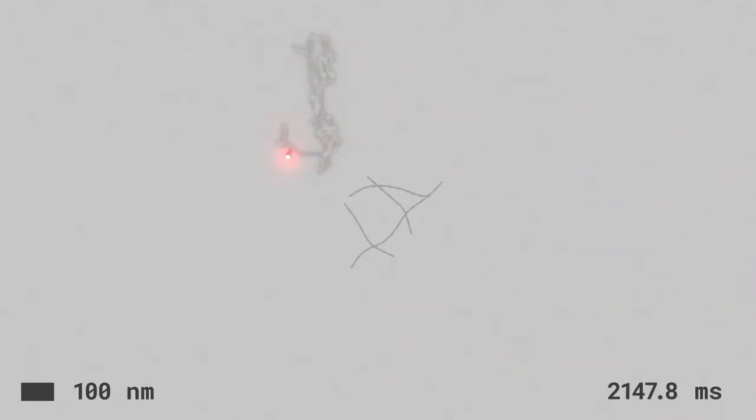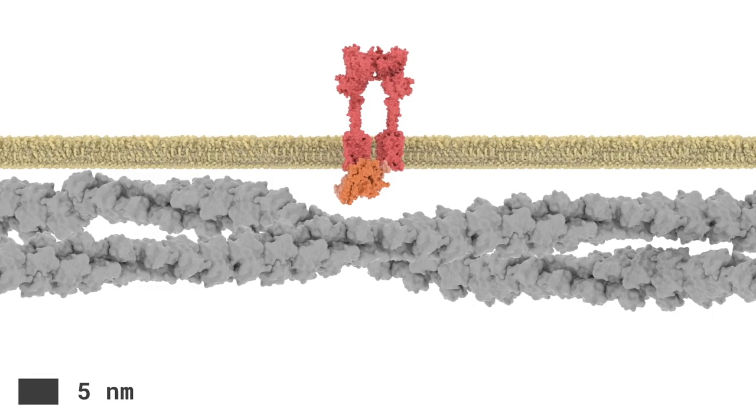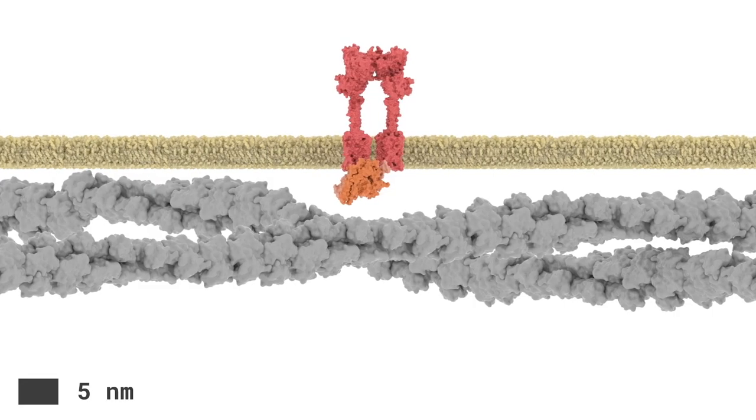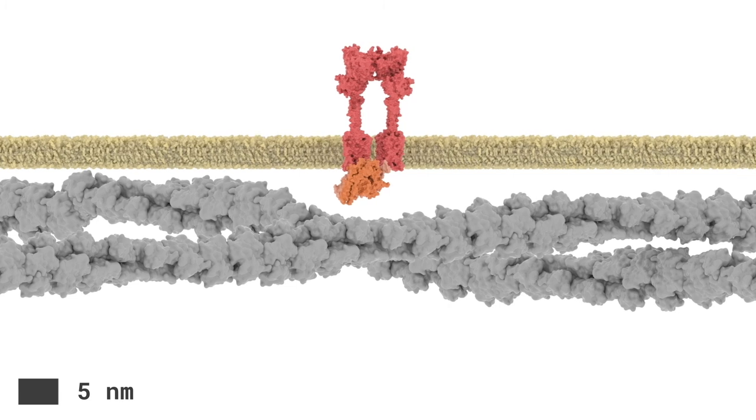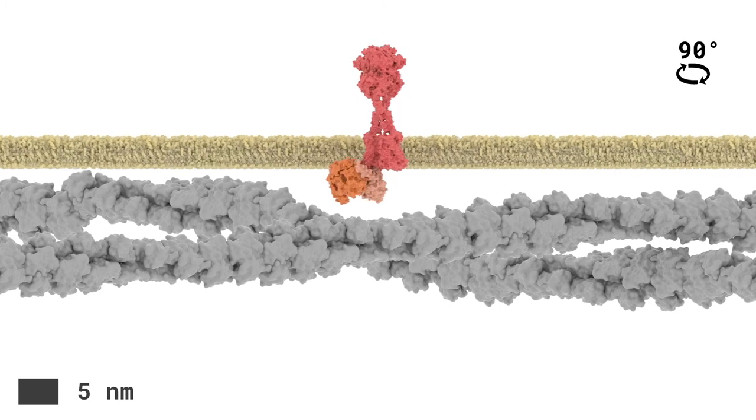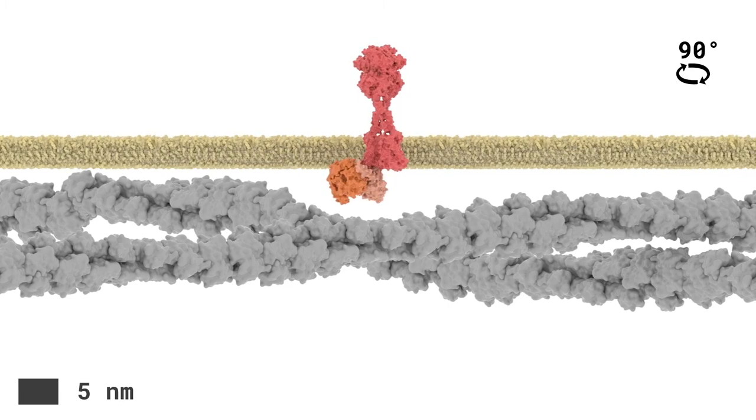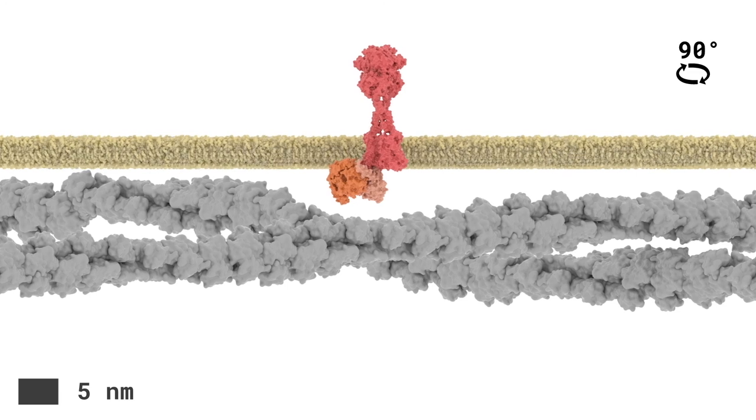After the GPCR molecule transitions from fast to much slower displacement, confinement can be observed. This takes place within fences or corrals, principally formed by the intracellular actin-based cytoskeleton, but also with a high degree of molecular crowding, including an increased concentration of cholesterol.